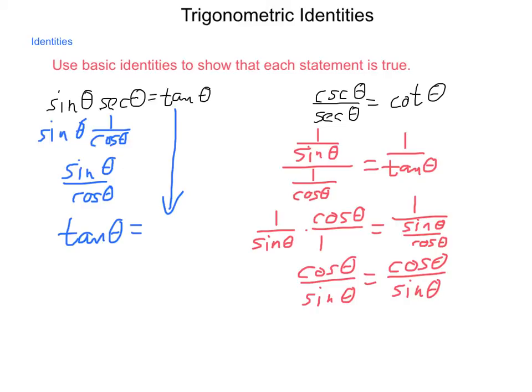Here you see two different ways of proving an identity. One is to simply work on one side of your equal sign until it looks like the other side. The second is to manipulate both sides using valid rules of mathematics until they arrive at the same location. Either is valid, and both are very useful. Sometimes you get to a point where you are stuck — then try to make the other side look like what you've just done.